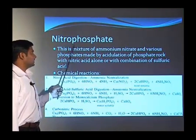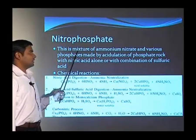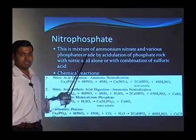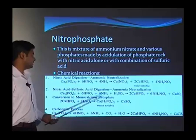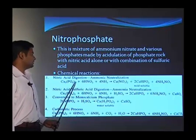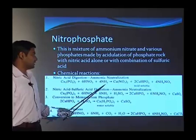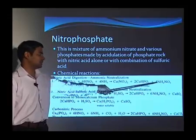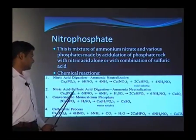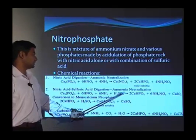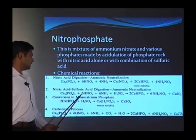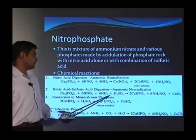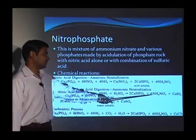The next thing we will discuss is nitrophosphate manufacturing. This is a mixture of ammonium nitrate and various phosphates made by acidulation of phosphate rock with nitric acid, or with a combination of sulfuric acid. The chemical reaction: phosphate rock with nitric acid, neutralized by ammonia, gives calcium nitrate, acid-soluble Ca(H2PO4)2, and ammonium nitrate. In the second step, nitric acid and sulfuric acid digestion with ammonia neutralization forms Ca(H2PO4)2 and ammonium nitrate.